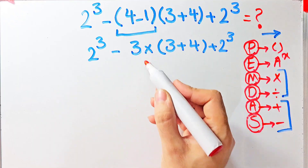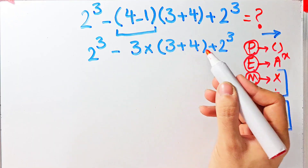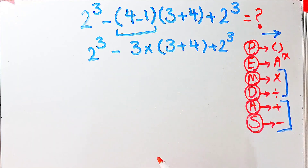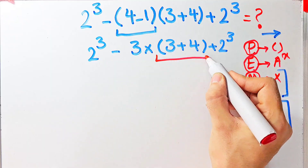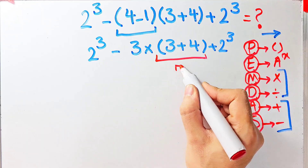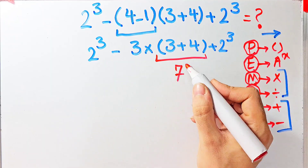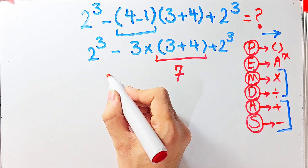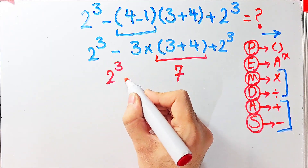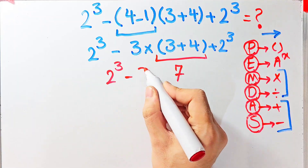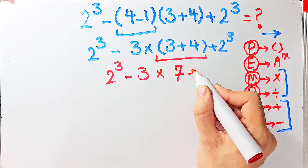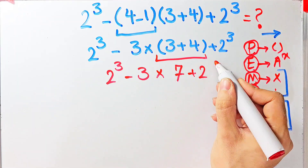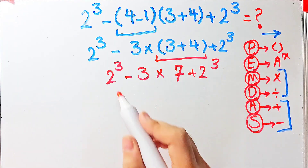We simplify the remaining parenthesis: 3 plus 4 equals 7. Now the question becomes 2 to the power of 3, minus 3, then times 7, then plus 2 to the power of 3. We still have exponents, subtraction, multiplication, and addition remaining.